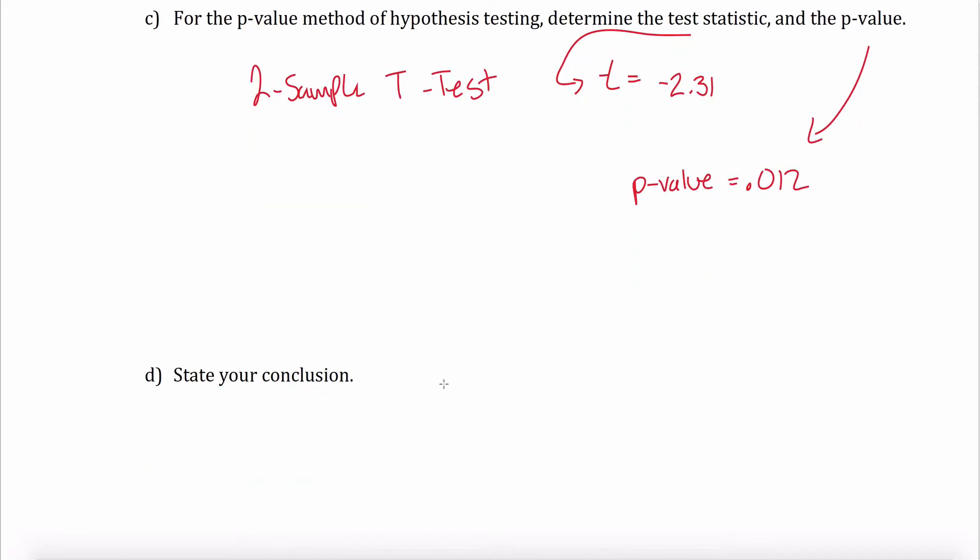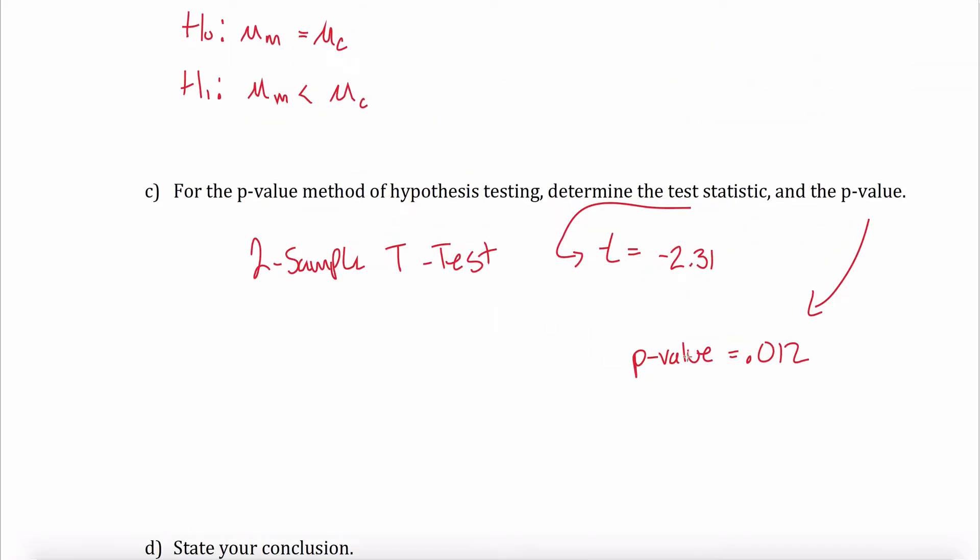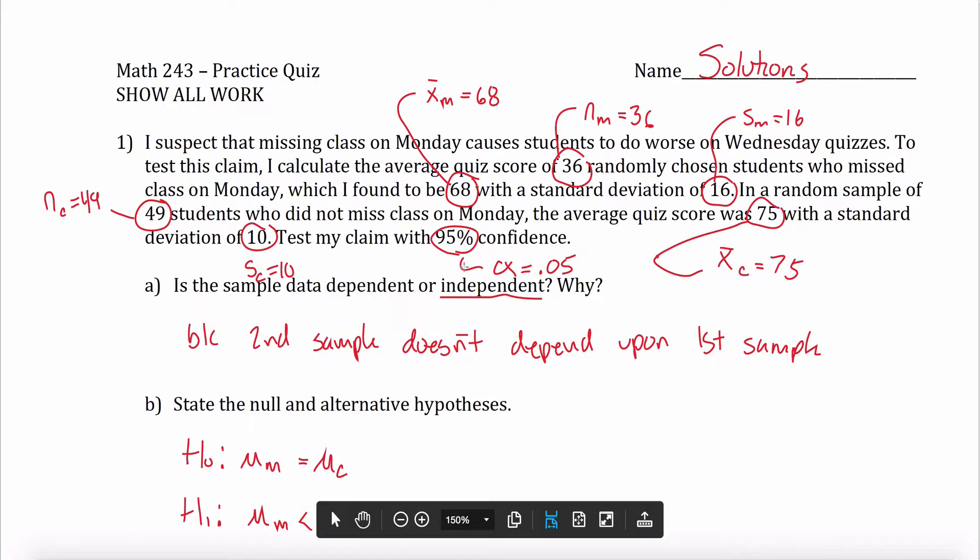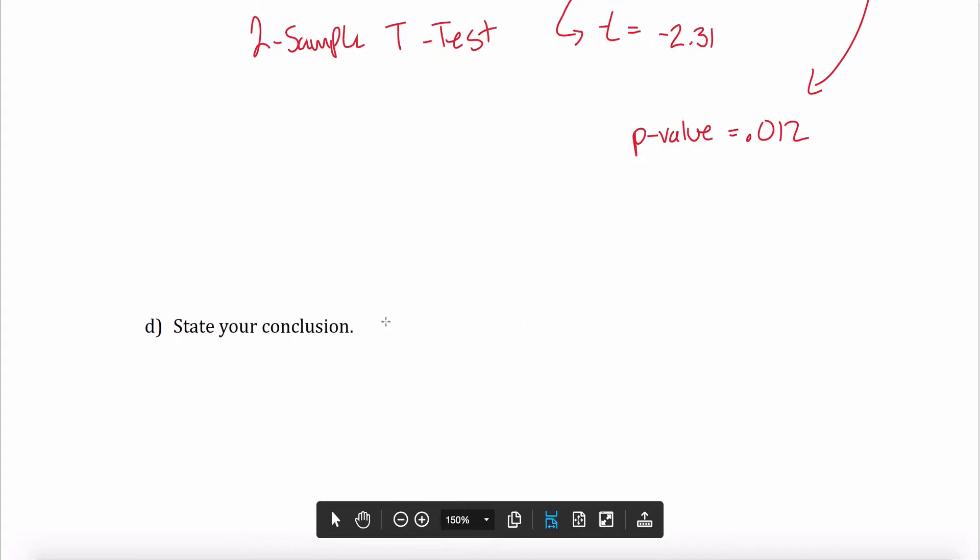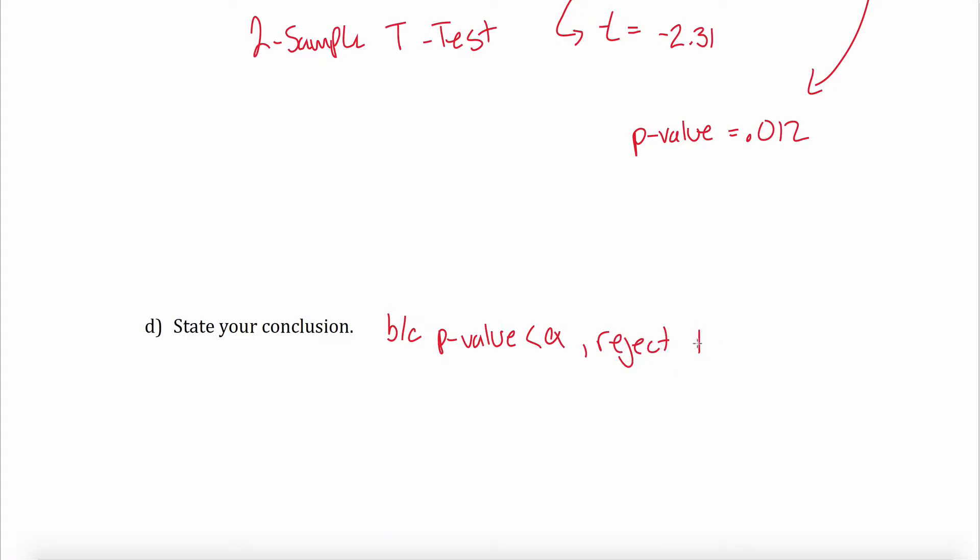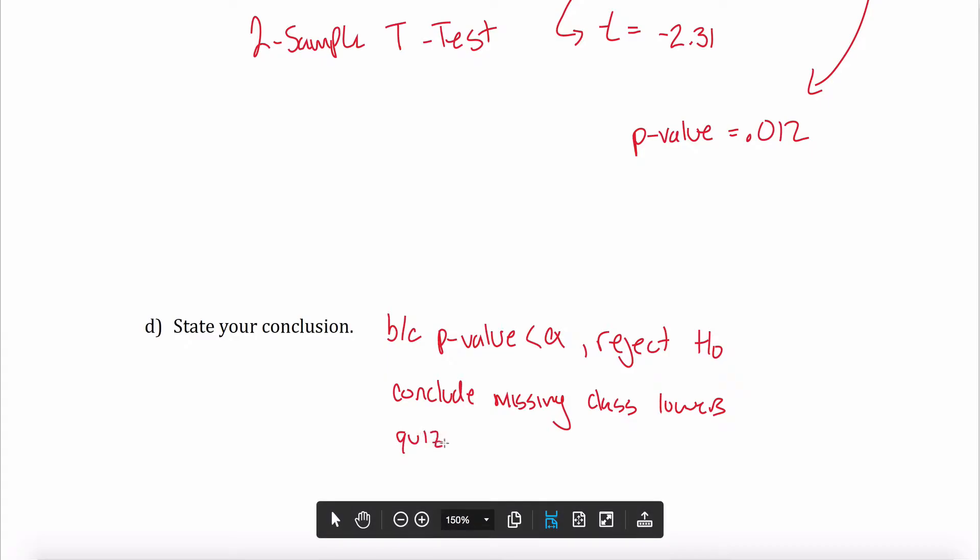But really what you want to do is be able to use those to state your conclusion. In this case, what I'm going to do anytime I use the p-value method is compare my p-value and alpha. My p-value is about 1%. Alpha is 5%. So I note that my p-value is less than alpha. So maybe I'll write something like because p-value is less than alpha, there is sufficient evidence to reject the null hypothesis and therefore conclude that missing class lowers your quiz score or causes lower quiz scores. So that would be my conclusion. That's the end of this first problem.